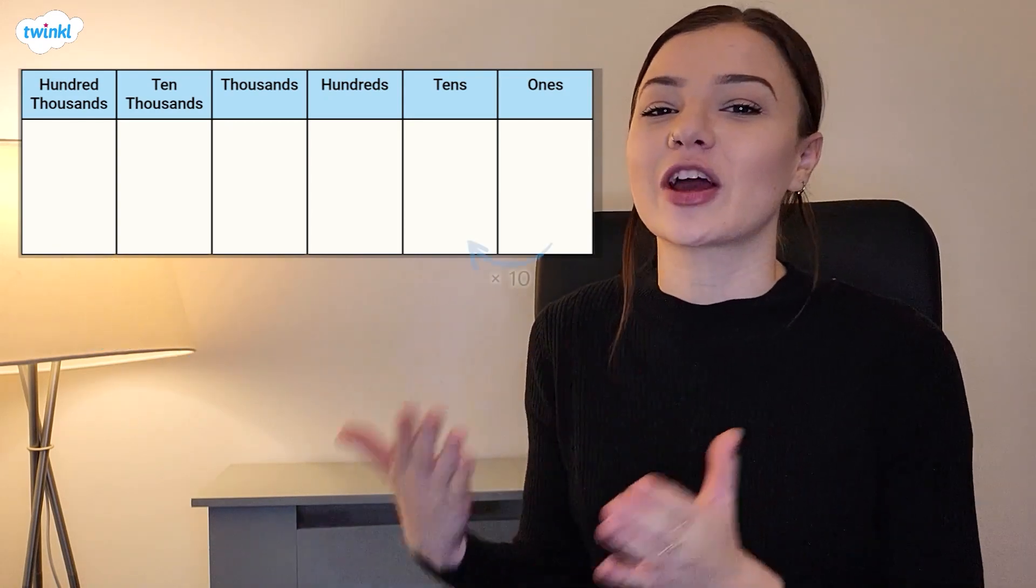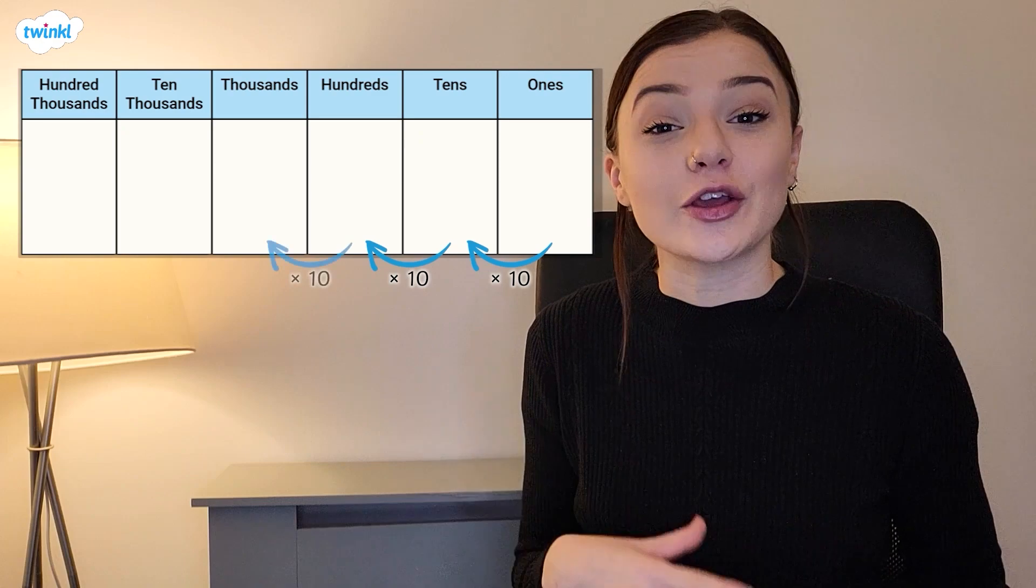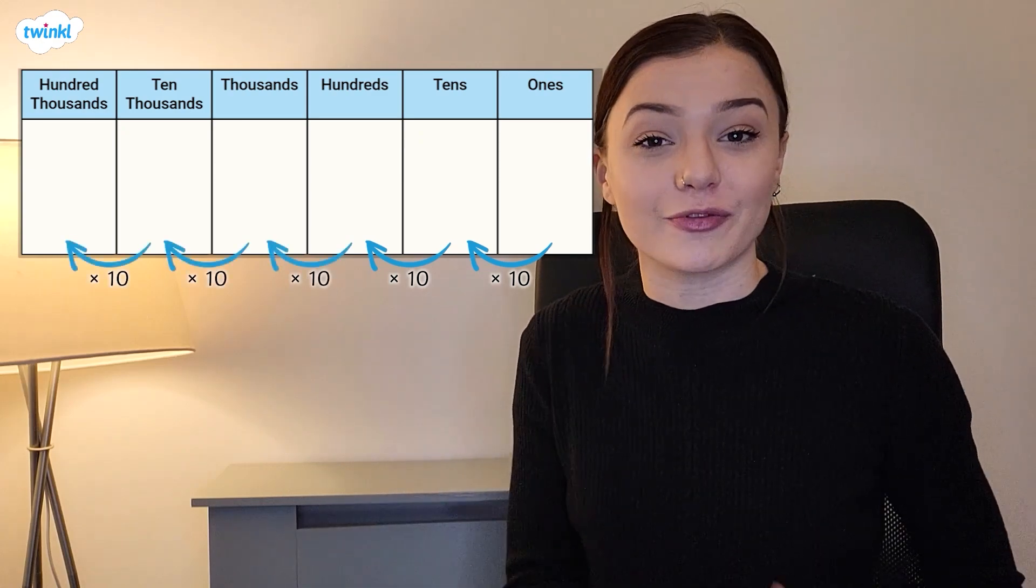As we move from right to left across the place value chart, the value of each column is 10 times the size as the column before.